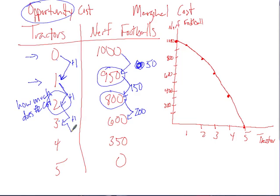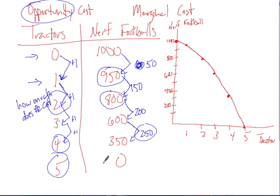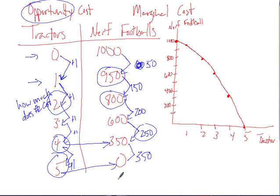To get the fourth tractor: we were producing 600, now we're producing 350 — a difference of 250. So in order to get the fourth tractor, we had to give up 250 Nerf footballs. And if we produce all tractors — the fifth tractor: at four tractors we were producing 350, at five tractors we're producing zero. So to get that fifth one, we had to give up 350. That's the marginal cost or marginal opportunity cost of producing each of these.